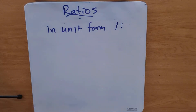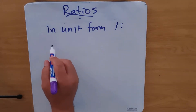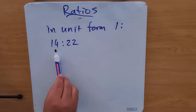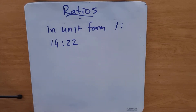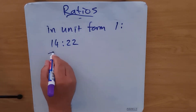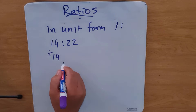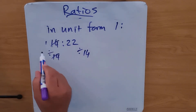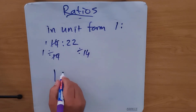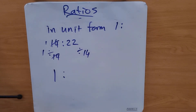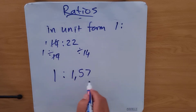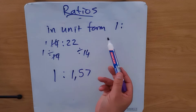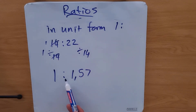This can sometimes be in decimal format. So if we've got a ratio of 14 to 22, in order to get that to a ratio of one to whatever that number is going to be, we need to divide both sides by 14. That's going to give me one as a ratio to 1.57. There's nothing wrong with that because our ratio is still in unit form — it's still got a one to 1.57, and it can be a decimal.